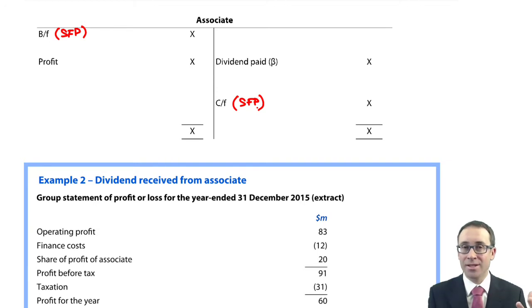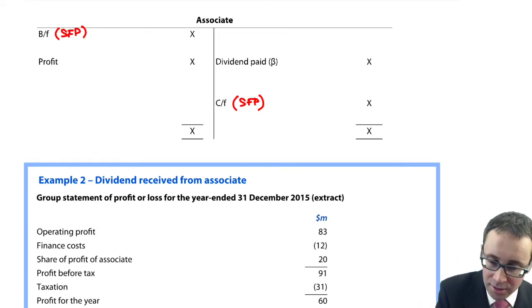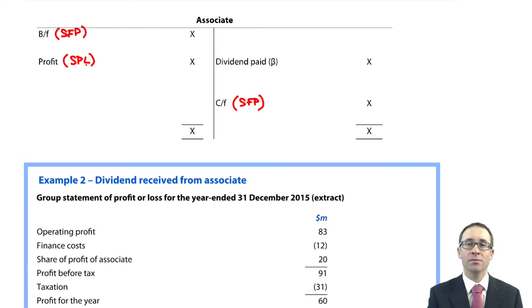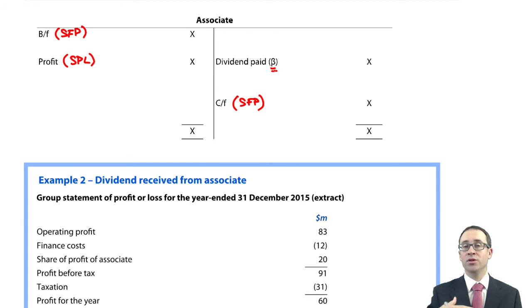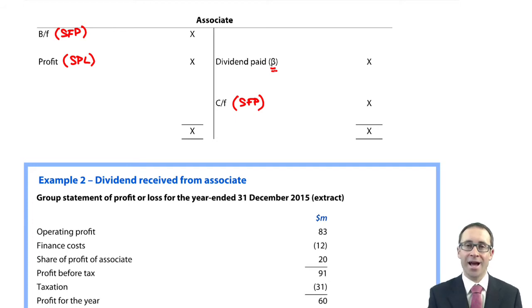Effectively, we have debited the investment in associate and credited the statement of profit or loss. So that debit to the statement of financial position increases the investment in associate — that figure comes from the statement of profit or loss. We would also include the other comprehensive income figure if there were any OCI relating to the associate. Once you've done that, balance things off and you've got your dividend — that is your dividend received. So essentially it's the dividend paid by the associate, which is the dividend that you have received, and that goes into your investing activities.